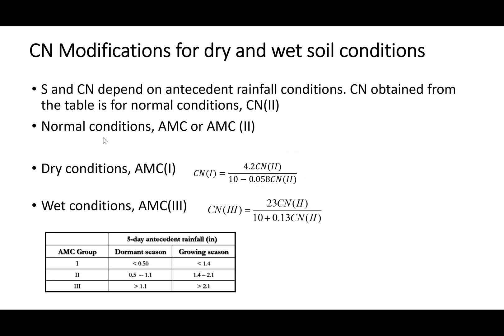The values in that table are meant for normal soil conditions — meaning the soil is neither too dry nor too wet — which we call normal antecedent moisture condition, AMC type 2. If the soil is dry, that is AMC type 1, and the value from the table needs to be modified using one expression. If the soil is wet, we again modify the table value using a different expression.